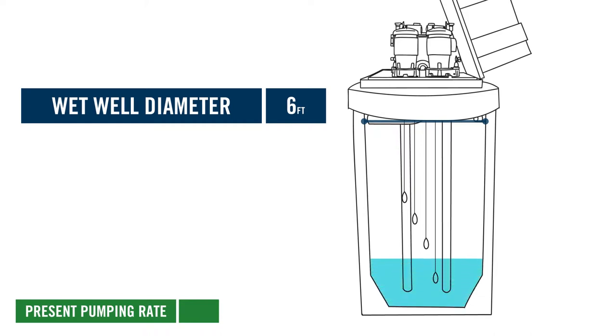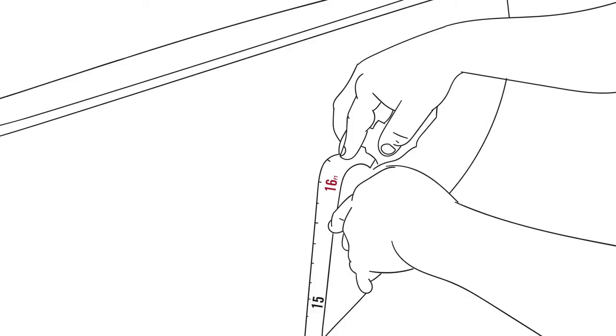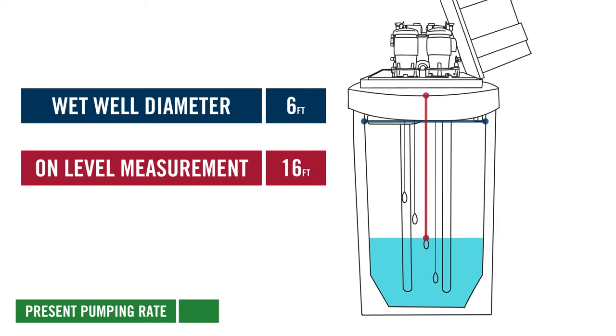When the lead pump starts pumping, measure the distance from the top of your wet well to the water level. This is the on-level measurement.